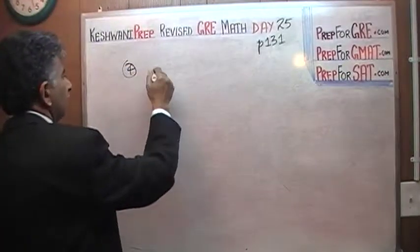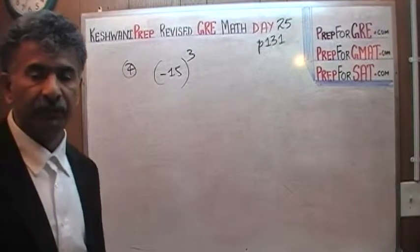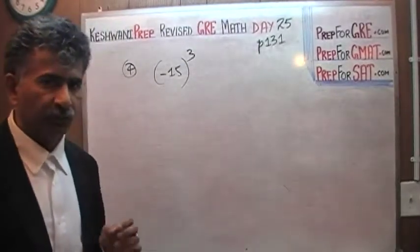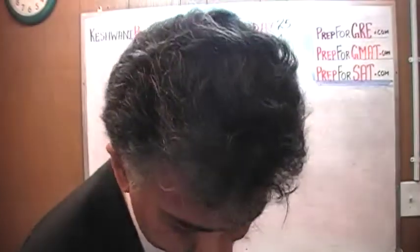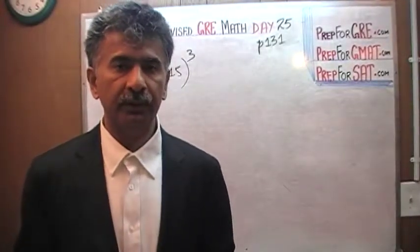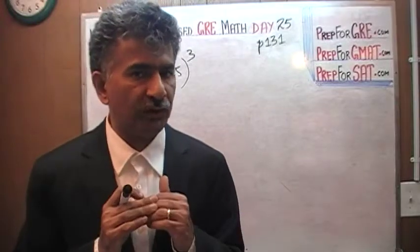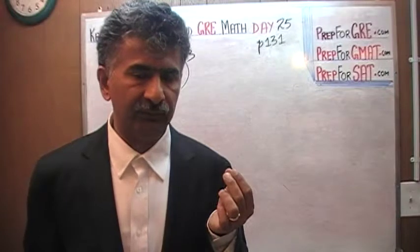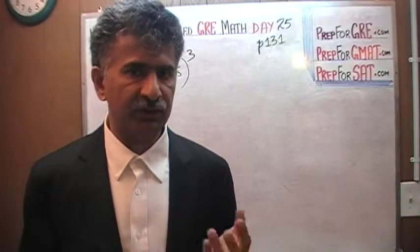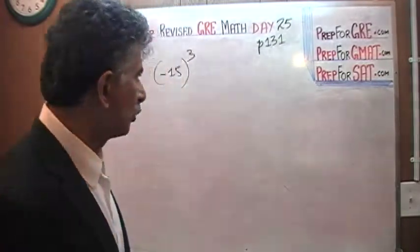Here is the prime example of what I mean by 'do not use the calculator unless absolutely necessary.' When you're sitting for the GRE — and this is what I tell my clients when they come to me for tutoring — there are some things you must know at your fingertips. One of them is: you must know the squares of numbers 1 through 20 by heart.